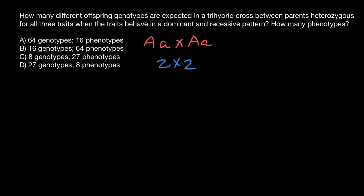You also know how to build a Punnett square for a dihybrid cross. For example, the genotype of the parents is going to be capital A small a, capital B small b, crossed with another parent that is also heterozygous for both genes. In that case we get a Punnett square that is 4 by 4, so 16 cells — the classic example about peas with different colors and surface textures, which can be wrinkled or smooth.